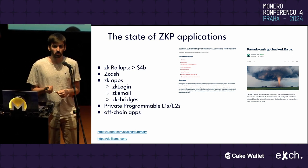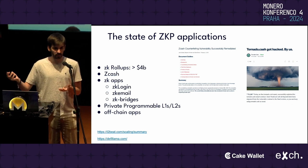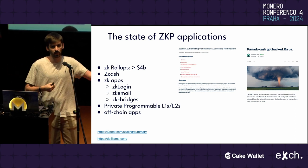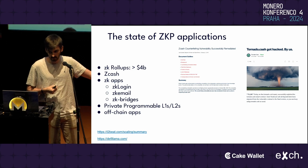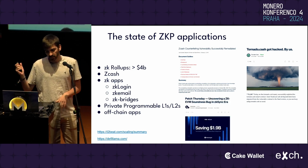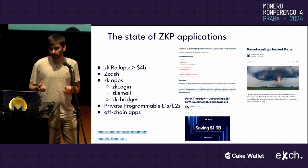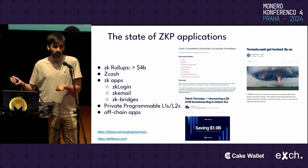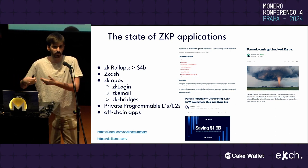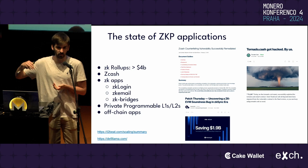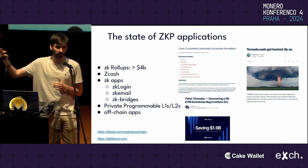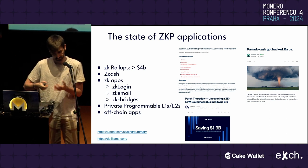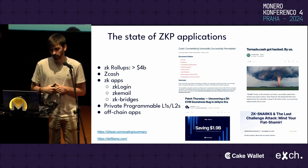TornadoCash had a very naive vulnerability in one of the main circuits — circuits are the zero-knowledge proof programs. That was detected by a white-hat hacker and then patched by the TornadoCash team. Then in one of the Zcash rollups, there was a critical vulnerability that basically could have allowed someone to take all the TVL, all the value locked in that chain.